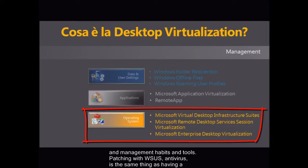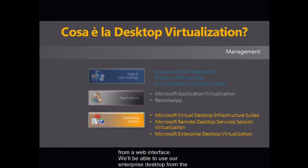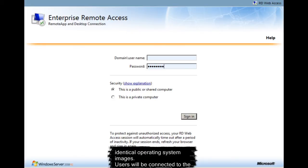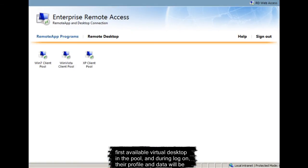Patching with WSUS and antivirus is the same as having a physical laptop or desktop. The biggest difference is that we can use our workstation also from a web interface — we'll be able to use our enterprise desktop from the Internet, keeping all our settings and data. We have to evaluate and decide if it's worth the effort to give a dedicated desktop to every single user, a personal virtual desktop, or to create a pool of virtual desktops that will contain a group of identical operating system images. Users will be connected to the first available virtual desktop in the pool, and during logon, their profile and data will be loaded from the network.